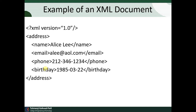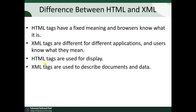An important feature of XML is that we can create our own tags. Here, 'address' is a user-defined tag, and 'name' is also a user-defined tag — all tags in XML are user-defined. XML is used to transfer data, whereas HTML is used to create a page — that is a very important difference. HTML tags have fixed meaning and the browser knows them, whereas XML tags are different for different applications and the user knows what they mean. HTML tags are used for display; XML tags are used to describe documents and data.